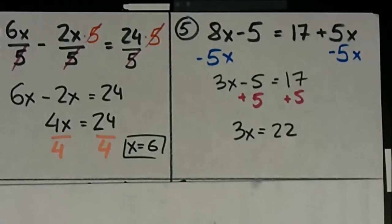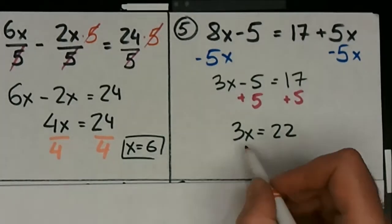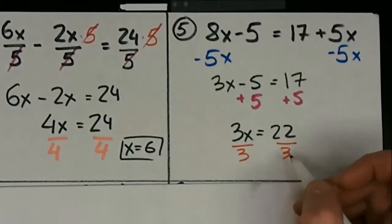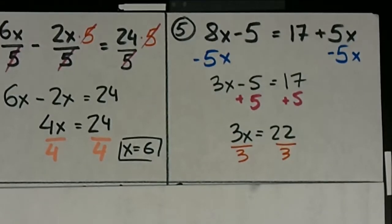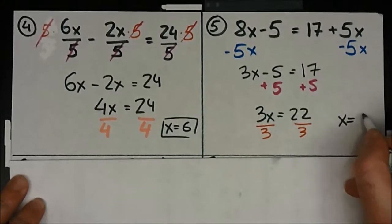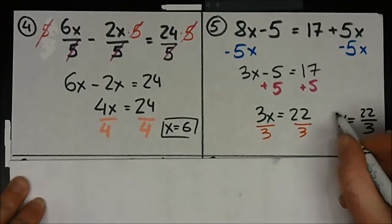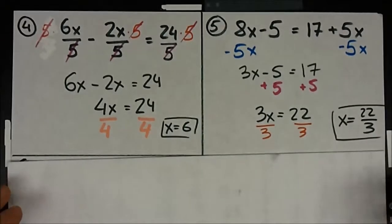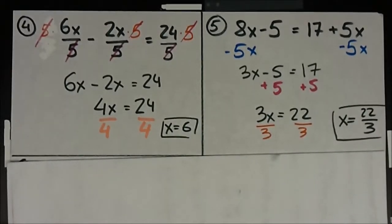Last but not least, divide both sides by 3. This ends up as a fraction, but that's okay — fractions are part of math. So you have a fractional answer: x equals 22 over 3. You can make that into a mixed number which would be 7 and a third. Fractions are not our enemy and they're fine by math, so they're fine by me. Questions on five?